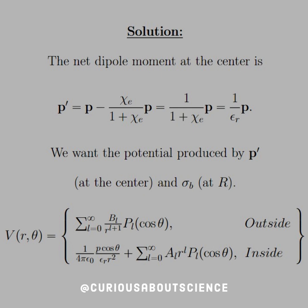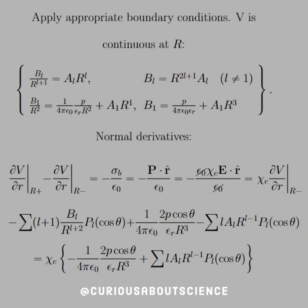Note that we had to apply the boundary condition of the field inside that's produced by the dipole. So that's why we have the 1 over 4 pi epsilon naught times P cosine theta over epsilon R R squared. Alright, so moving forward.